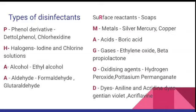Formalin gas is used in the fumigation process when fumigating a room, hospital, or operation theater. R represents surface reactants — that is, soaps. Soaps kill most of the microorganisms on the superficial skin, so soaps also come under disinfectants. M represents metals — some metals like silver, mercury, and copper are used as disinfectants; the best example is silver sulfadiazine cream. A represents acids — boric acid alone is not a very effective disinfectant, but when mixed with other components, such as chlorine, it forms Eusol solution, which is a very effective disinfectant.